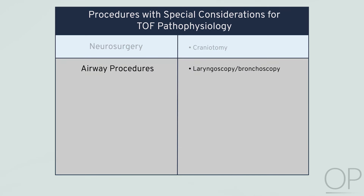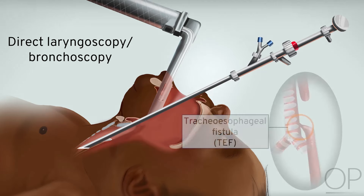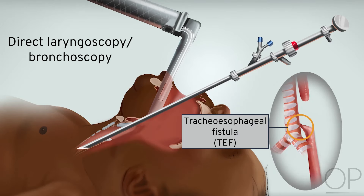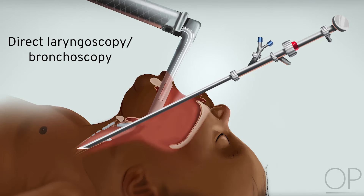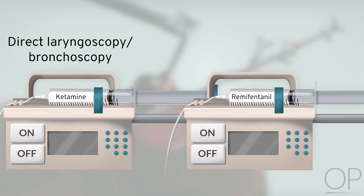Direct laryngoscopy and bronchoscopy are relatively frequently performed in neonates with Tetralogy of Fallot, often to assess coexisting airway anomalies or the exact location of tracheoesophageal fistulas. Given the delayed inhalational induction in the presence of right-to-left shunting and the need for deep levels of anesthesia without causing hypotension or apnea, various combinations of intravenous anesthetics like ketamine or remifentanil are often used to facilitate airway management.